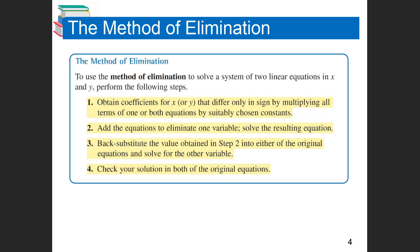The steps to use the method of elimination to solve a system of two linear equations in X and Y: first, obtain coefficients for X or Y that differ only in sign by multiplying all the terms of one or both equations by a suitably chosen constant — sometimes you don't have to do that. Then add the equations to eliminate one variable. Solve the resulting equation. Back-substitute the value obtained in step two into either of the original equations to solve for the other variable. Finally, check your solution in both original equations.